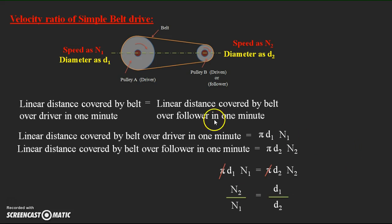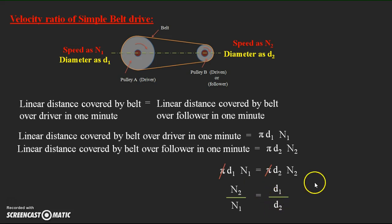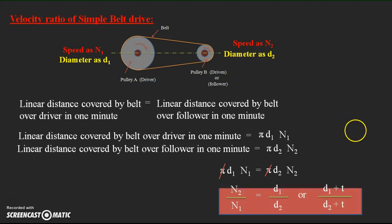When you want to consider the thickness of the belt t as well, the equation becomes (D1 + t) by (D2 + t). We add the thickness to the diameter values to get the velocity ratio after considering belt thickness. This is the complete equation for the simple belt drive system.